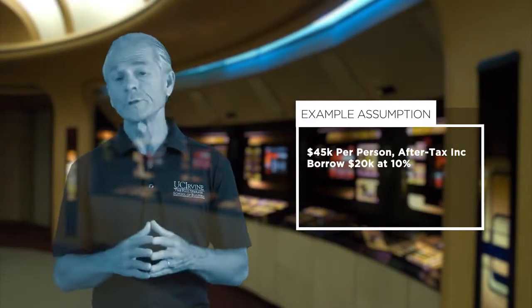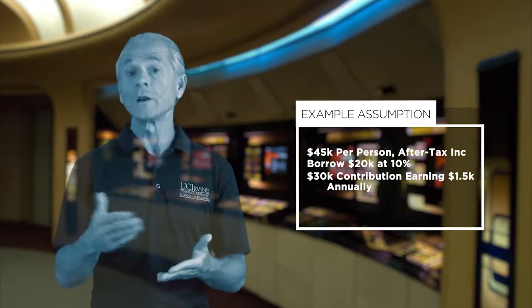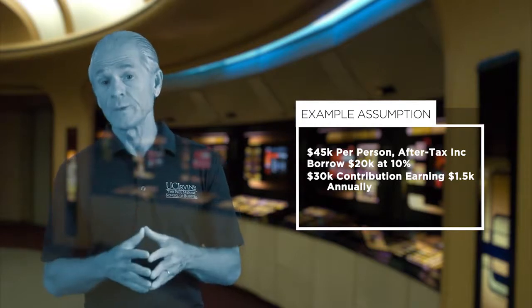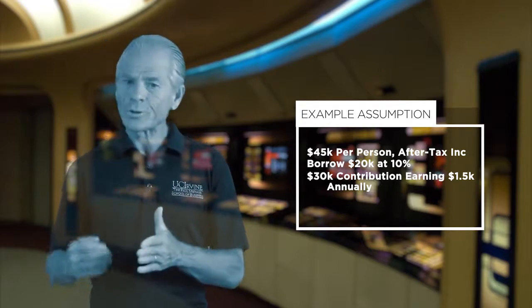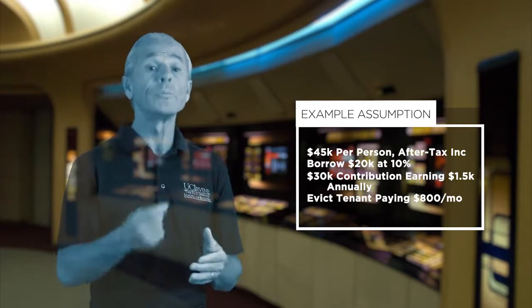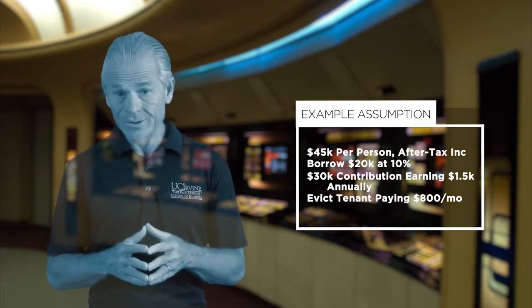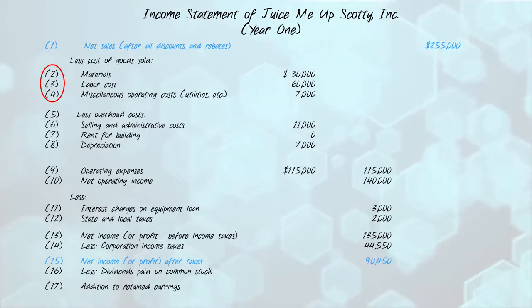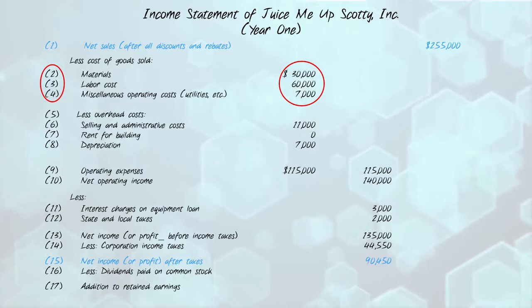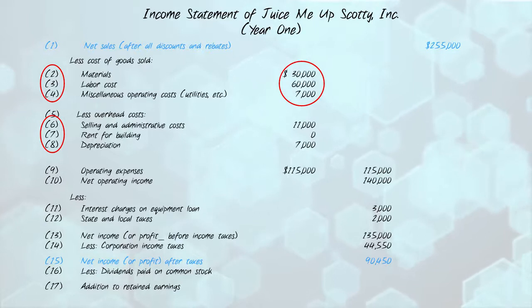Suppose both you and your spouse earn after-tax salaries of forty-five thousand dollars a year as sales representatives for a hospital equipment distributor. But you have much higher aspirations and no shortage of entrepreneurial ambitions. So you both quit your jobs to open up your own business, one that leverages your expertise in health foods. Your new business is a health food juice bar called Juice Me Up.